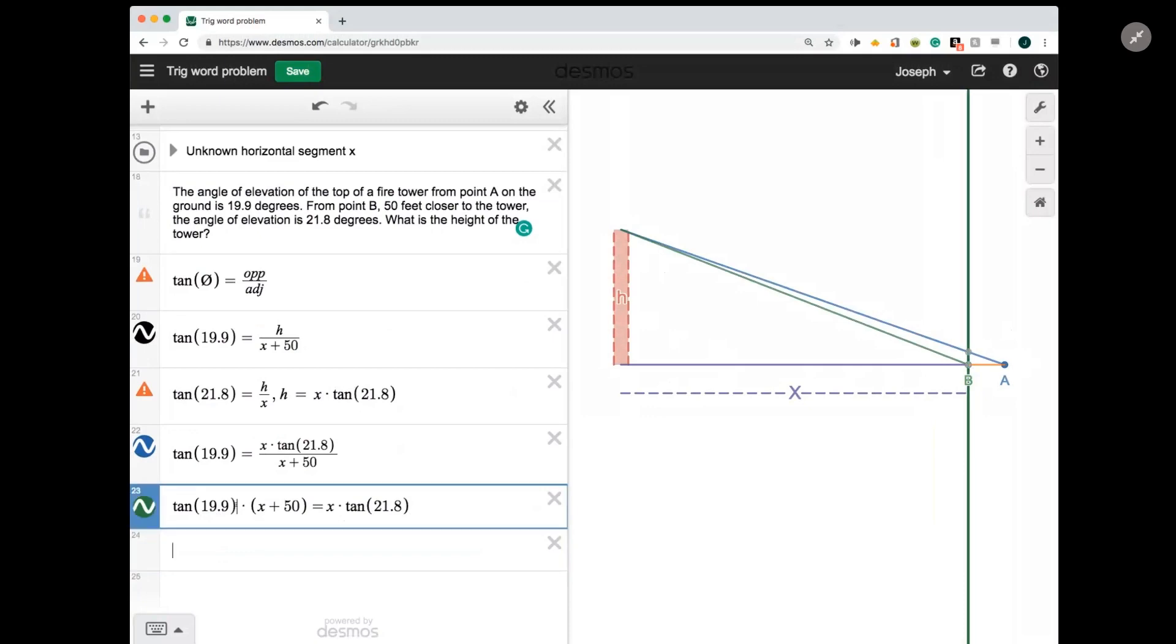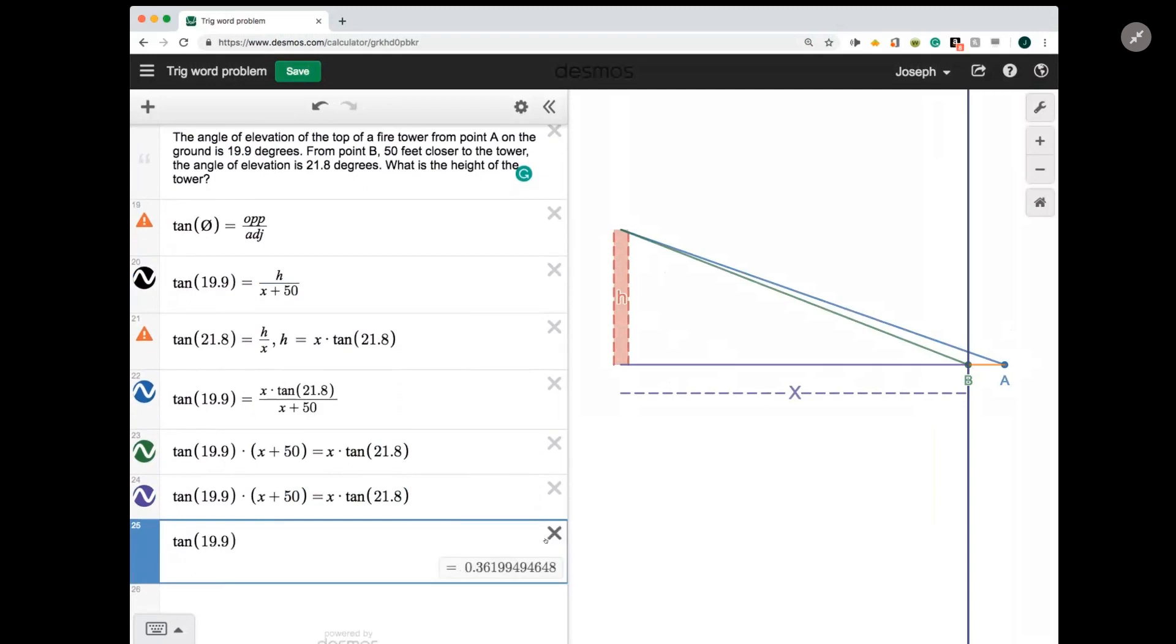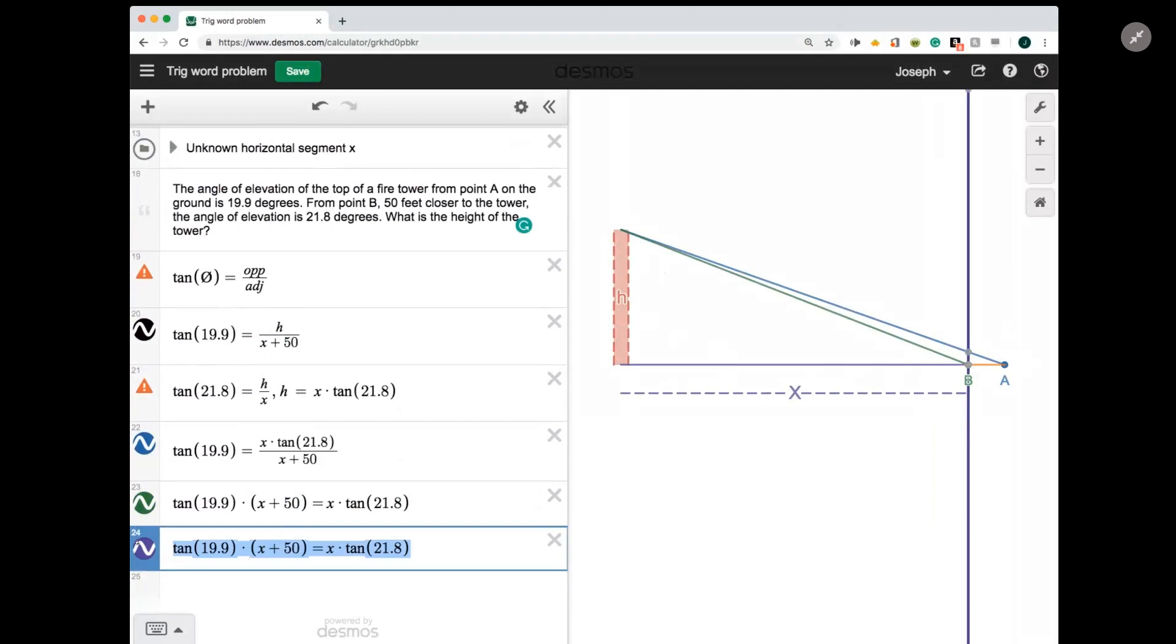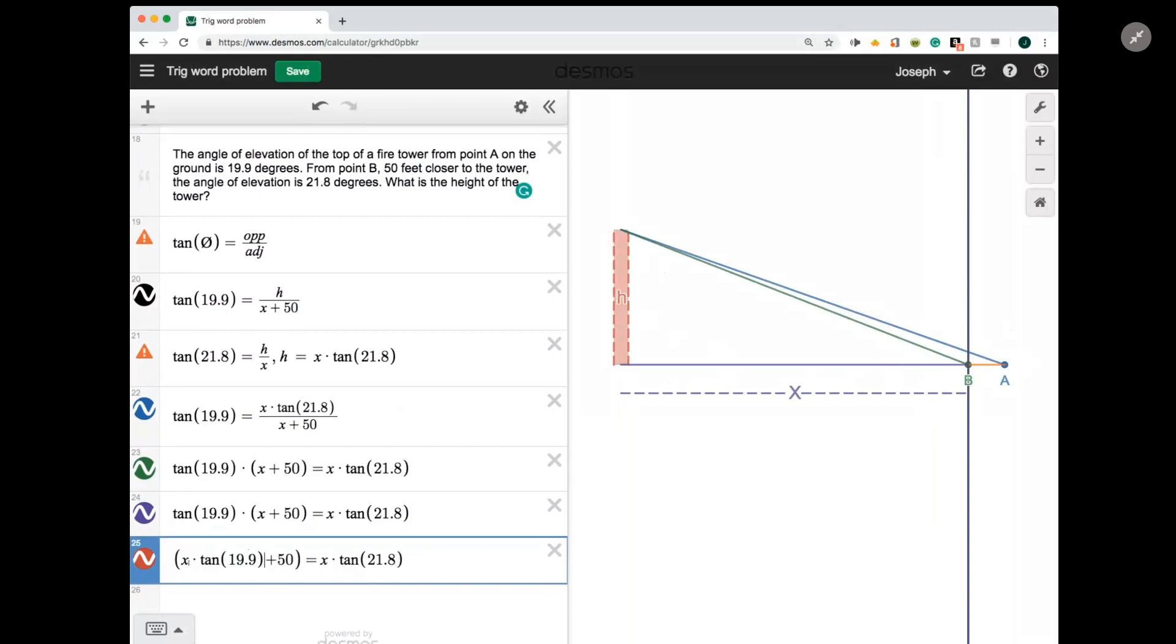And now if I can distribute this value into this binomial, I will have simplified the left-hand side a bit. And then I can start bringing all the x terms to one side. So I'm going to distribute this value here, whatever tangent of 19.9 is, by the way, tangent of 19.9 is approximately this amount. But that doesn't really matter. We'll just distribute it, knowing it's equal to something. So I'm going to take it, and I'll have x times that amount, and 50 times that amount.